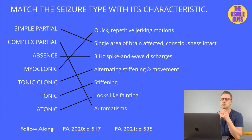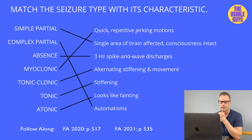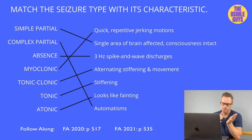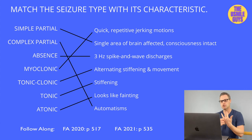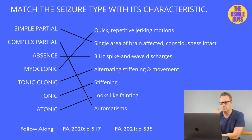The myoclonic seizure is characterized by quick, repetitive jerks. The tonic seizure is characterized by stiffening only. The tonic-clonic seizure, also known as the grand mal seizure, is what most people think of: alternating bouts of stiffening then movement. Patients experiencing a tonic-clonic seizure have post-ictal confusion, urinary incontinence, and tongue biting — always ask if they bit their tongue or had mouth bleeding.